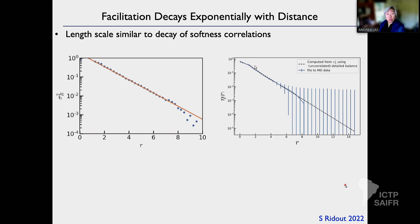We can measure elements of the matrices — they go into these correlation matrices, and each matrix element decays exponentially with the same correlation length. So this is a picture that's really consistent with itself: a nice exponential decay with a consistent correlation length.